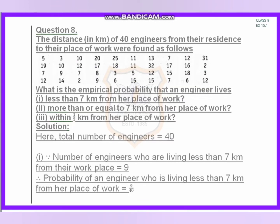Hello students, today we will continue Chapter 15, Question 8. The distance in kilometers of 40 engineers from their residence to the workplace were found as follows. Here we have to find the probability of: less than 7 kilometers from workplace, more than 7 kilometers from workplace, and within half a kilometer from the workplace.